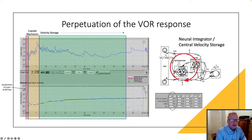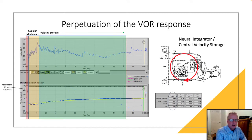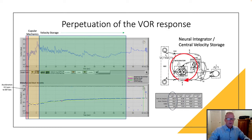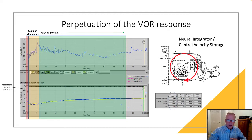This is known as the velocity storage mechanism. During those six seconds of intense afferent drive, we don't actually need six full seconds of afferent drive to produce a VOR. So during that time, the neural integrator — the velocity storage mechanism — stores all of that neural response.